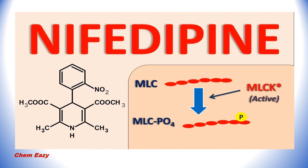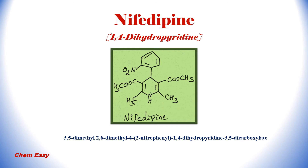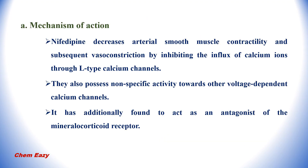The third drug under calcium channel blockers is nifedipine, which comes under the class of 1,4-dihydropyridines. The IUPAC name is 3,5-dimethyl 2,6-dimethyl-4-(2-nitrophenyl)-1,4-dihydropyridine-3,5-dicarboxylate. The mechanism of action: nifedipine decreases arterial smooth muscle contractility and vasoconstriction by inhibiting the influx of calcium ions through L-type calcium channels. It also possesses non-specific activity towards other voltage-dependent calcium channels, and has additionally been found to act as an antagonist of the mineralocorticoid receptor.